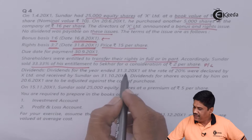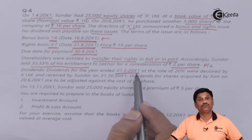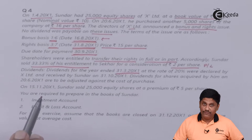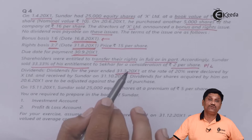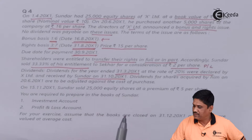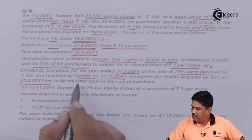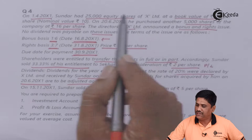Dividend for the year ended 31st March 2001 — the current year opening date is 1st April 2001. The dividend you receive in the year ended 31st March 2001 is from the previous year. At the rate of 20%, it was declared by the company and received by Sundar on 31st October 2001. Dividend for shares acquired by him on 28th June 2001 are to be adjusted against the cost of purchase.